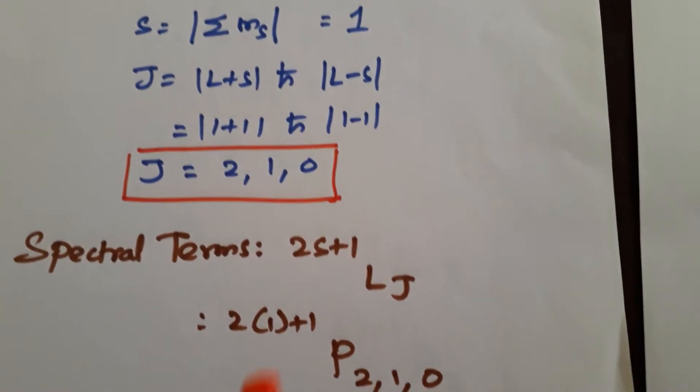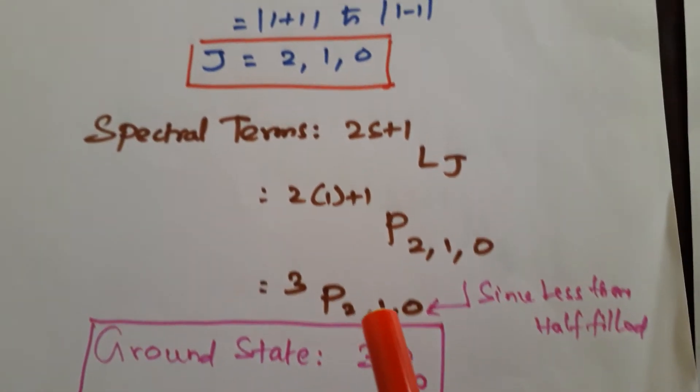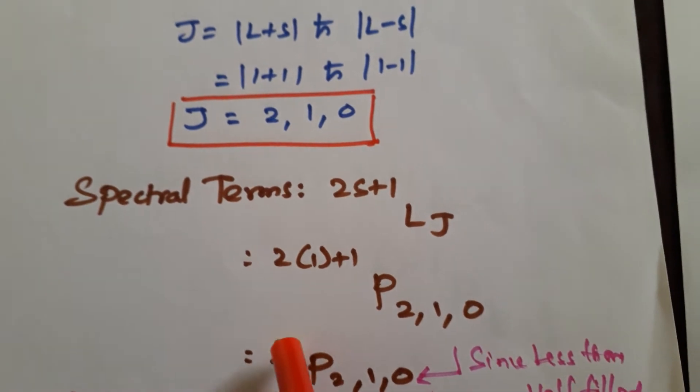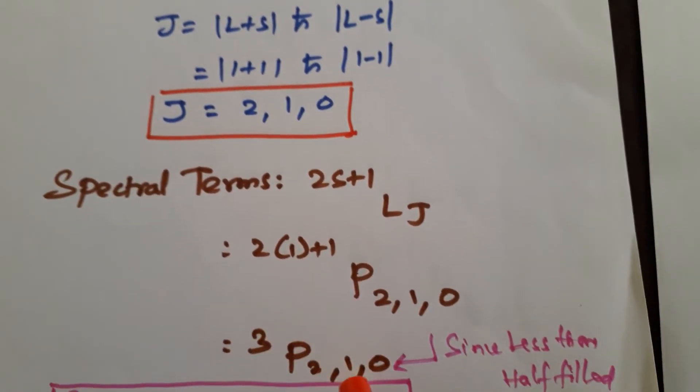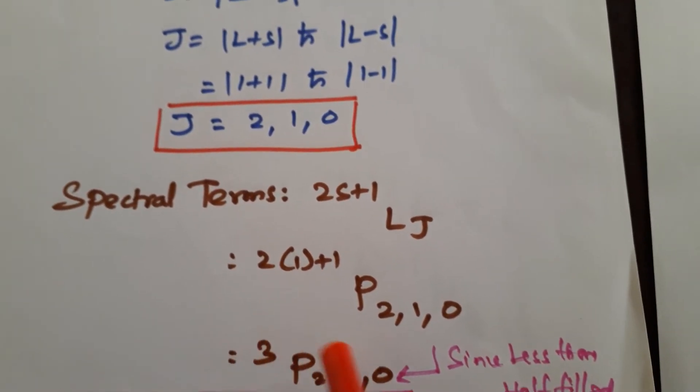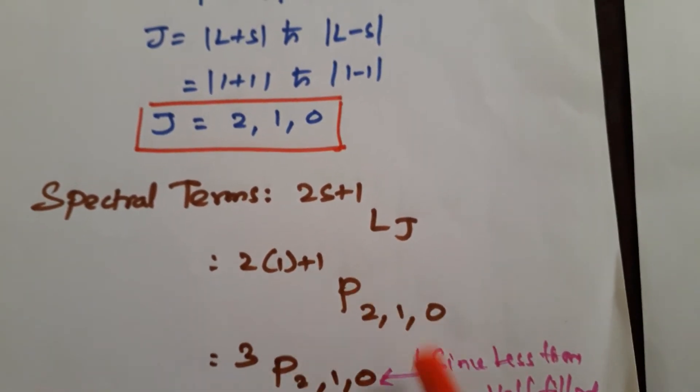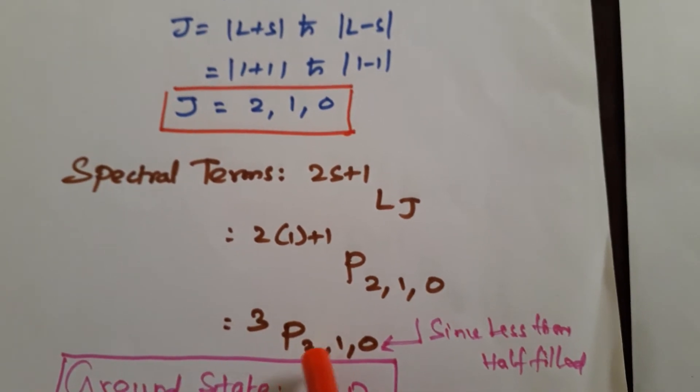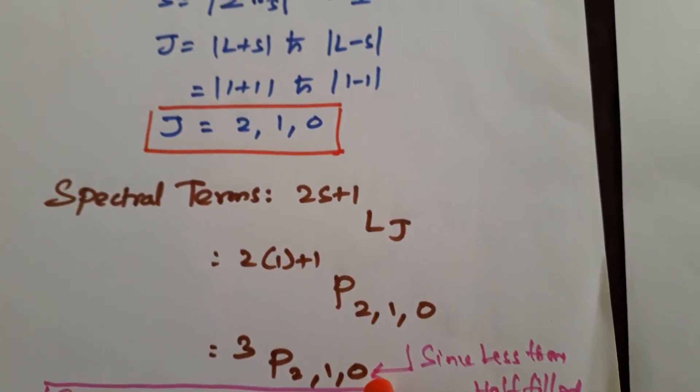For this spectral term, you will get like this. There are three spectral terms you are getting after substitution: triplet P2, triplet P1, triplet P0. So from this, which is the lowest ground state? Whether this 2 is the ground or 1 is the ground or 0 is the ground, we need to find it.